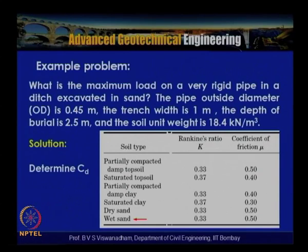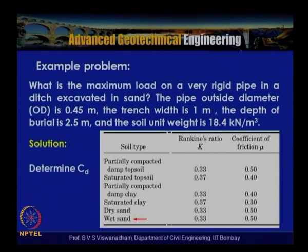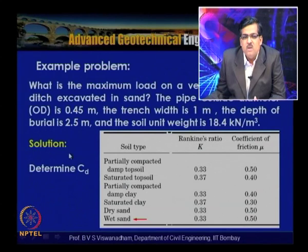Now let us look at an example problem based on the previous discussion. We need to calculate the maximum load on a very rigid pipe in a ditch excavated in sand. The pipe outside diameter is 0.45 m, the trench width is 1 m, the depth of burial is 2.5 m, and the soil unit weight is 18.4 kN/m³.